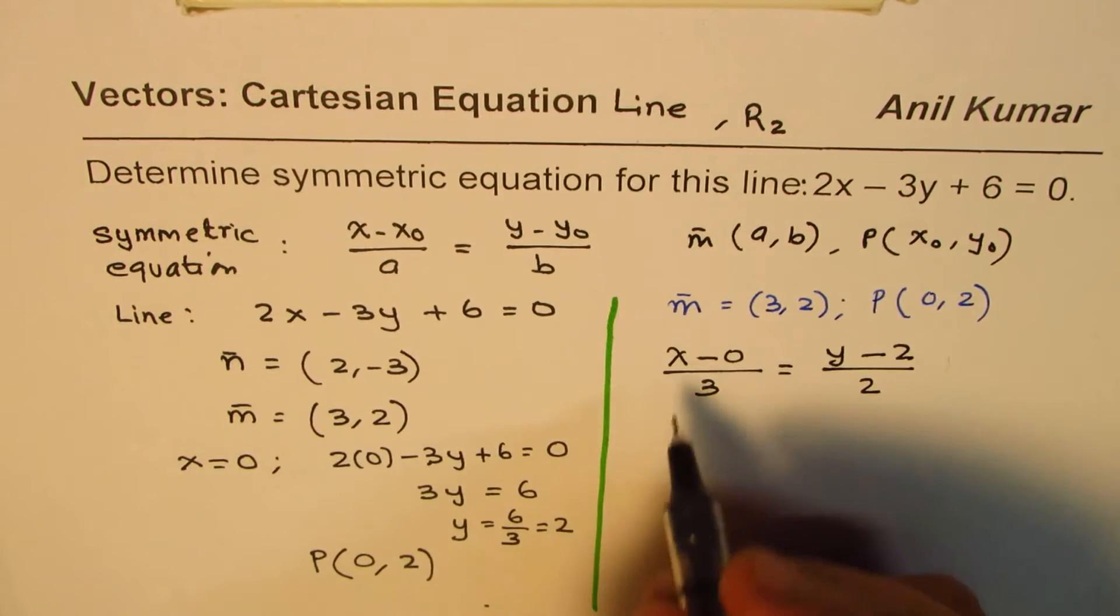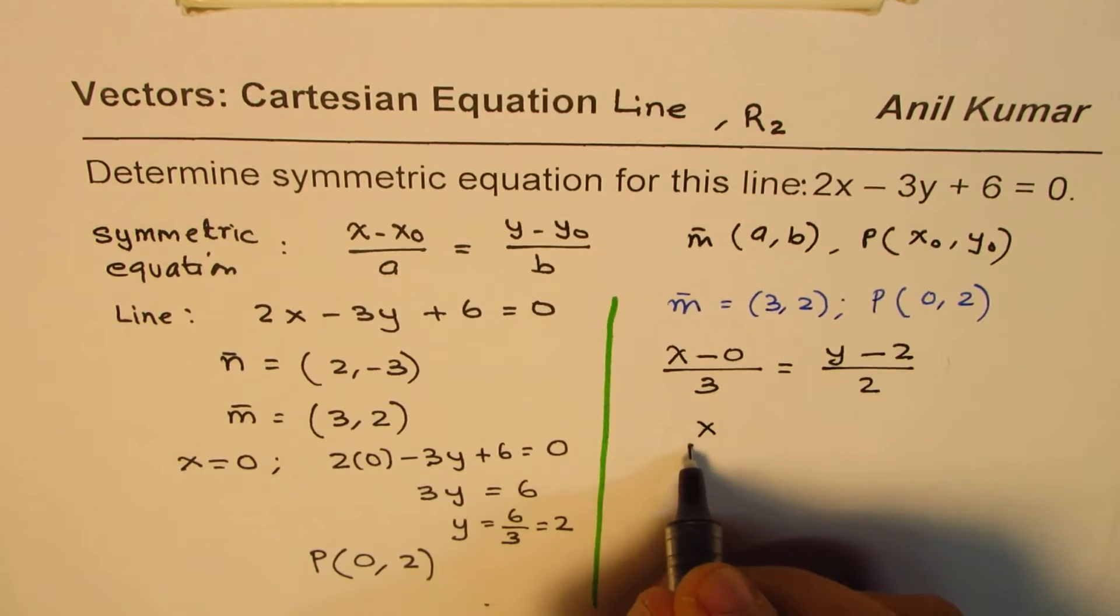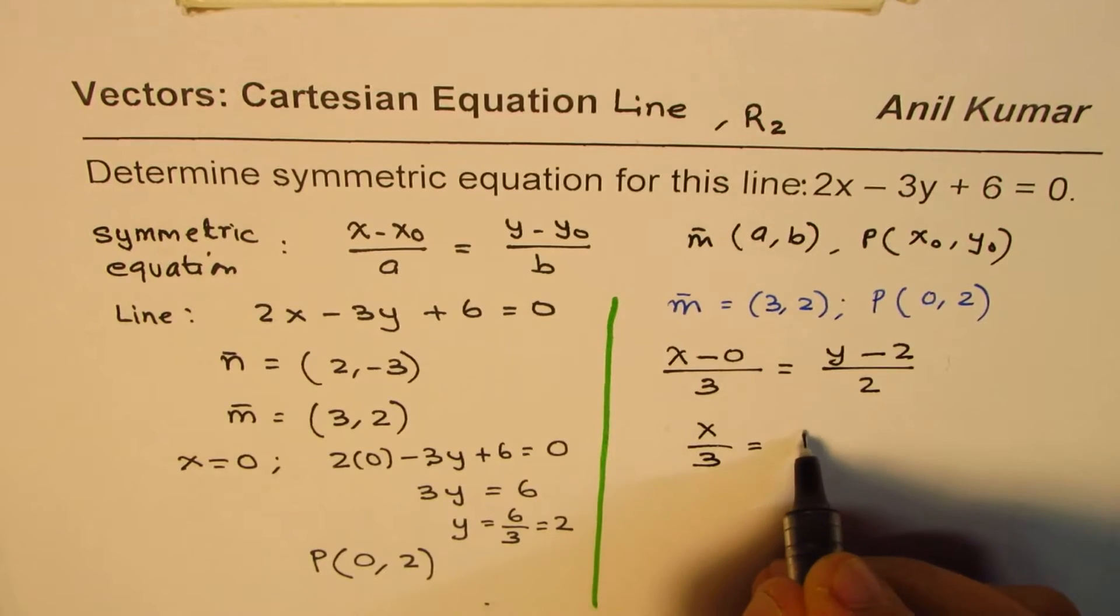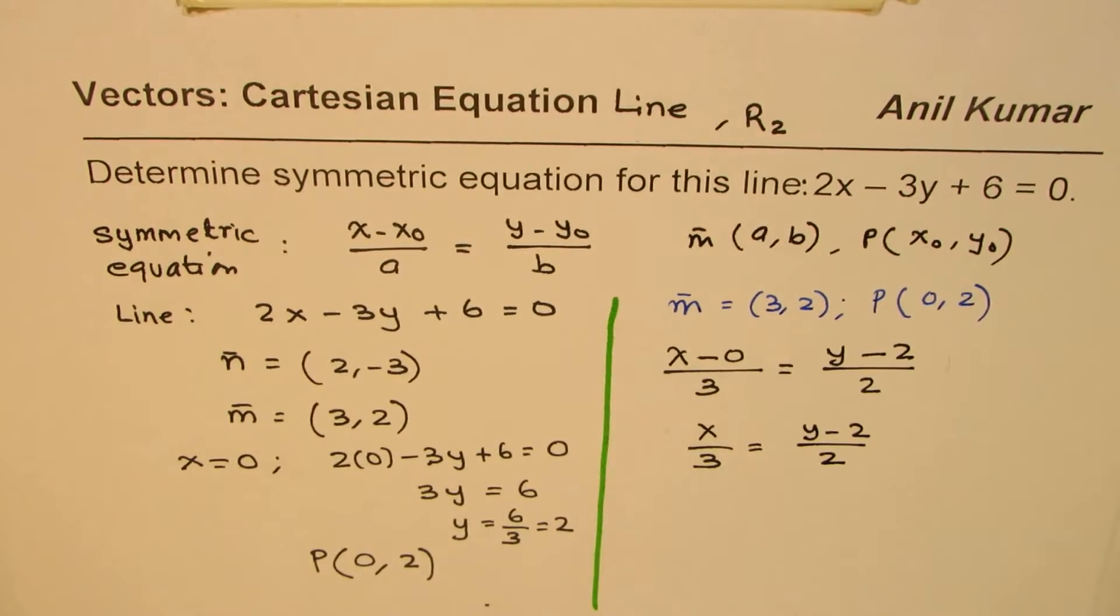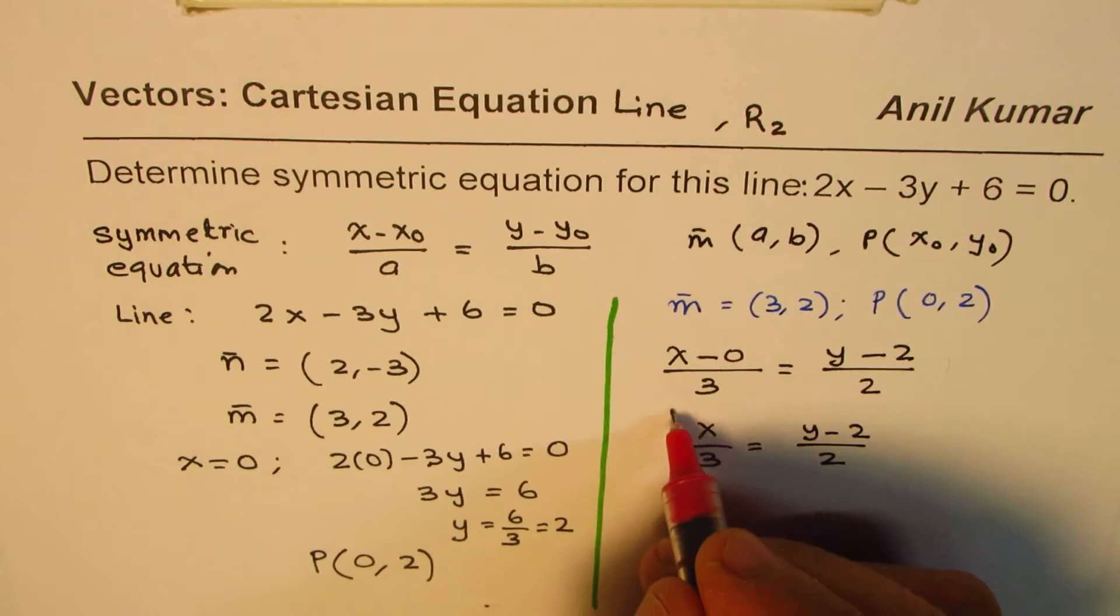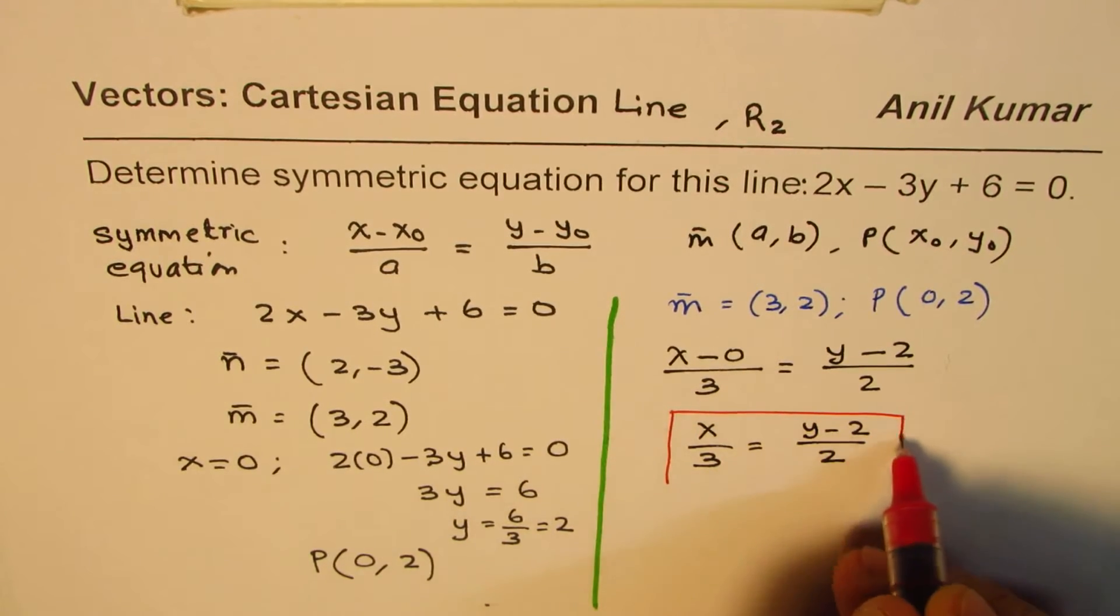So, that becomes the Cartesian equation. I will simplify this and write it as x over 3 equals to y minus 2 over 2. So, that is our answer.